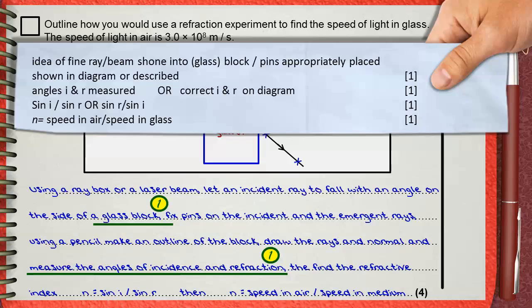The third mark is for mentioning the first rule of refractive index, which is sine i divided by sine r, or the opposite sine r divided by sine i if you use the other side of the block, which is from dense to rare. This is our third mark.